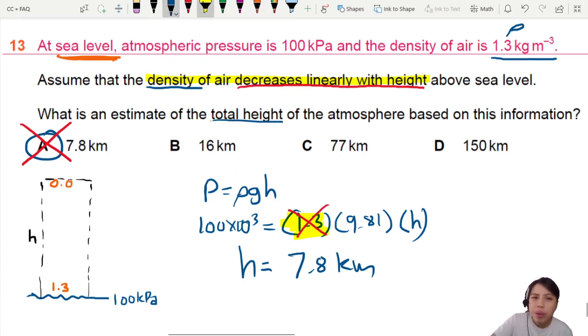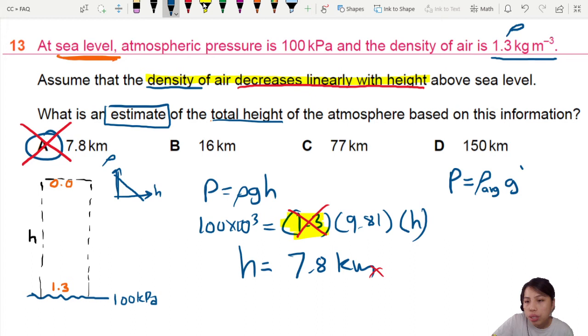So what we can do now is think about this: air density decreases linearly. Linearly could be something like this, density with height, maybe like this. You can assume that. So if you want to plug in here, you're going to use the average density instead, because we're going to estimate. So what you can do is P equals average density times G times H instead.